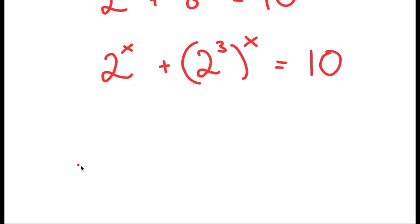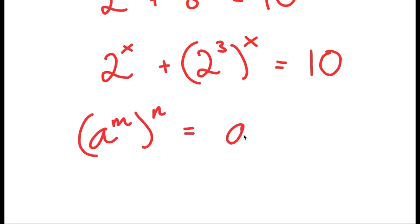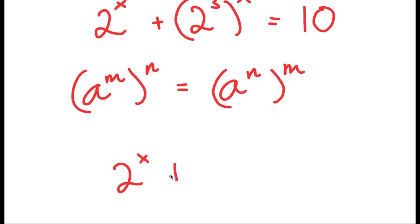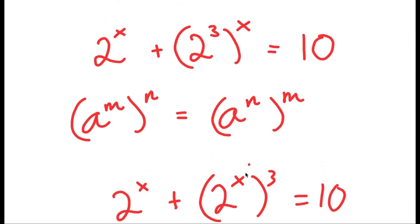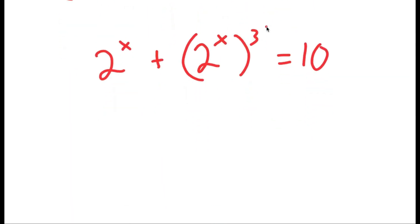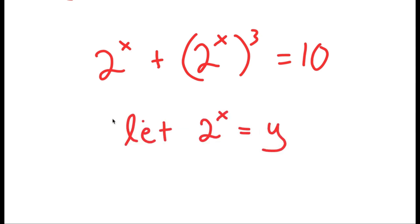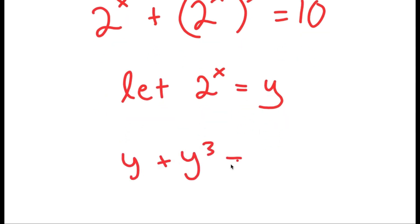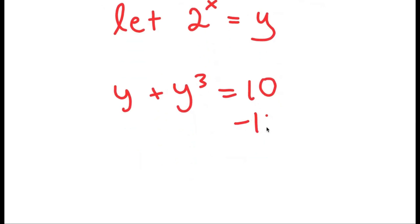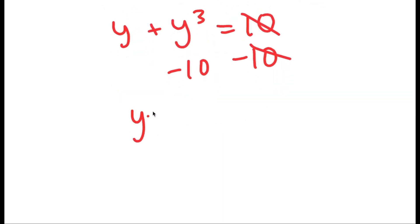Now if I have something in the form a to the power of m to the power of n, this equals a to the power of n to the power of m. So I switch the places of 3 and x to get 2 to the power of x plus 2 to the power of x to the power of 3 equals 10. I'll let 2 to the power of x equal the variable y, giving me y plus y cubed equals 10, or y cubed plus y minus 10 equals 0.